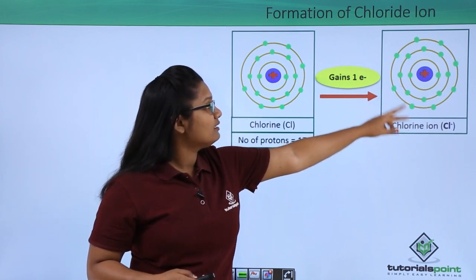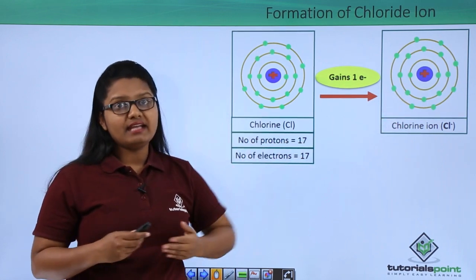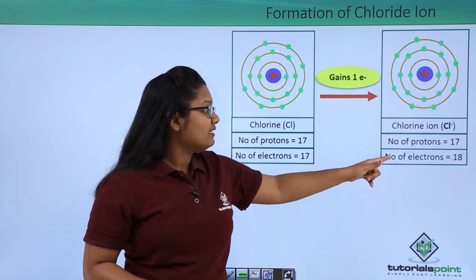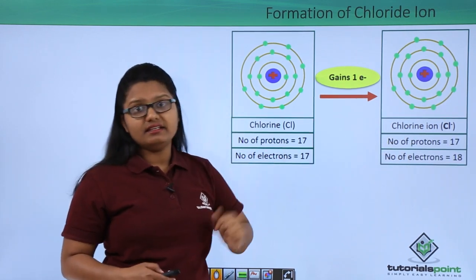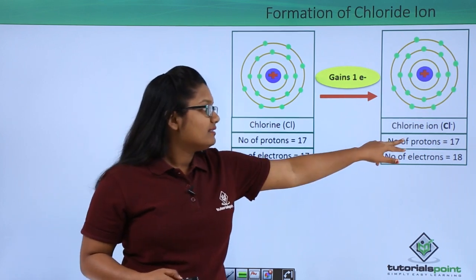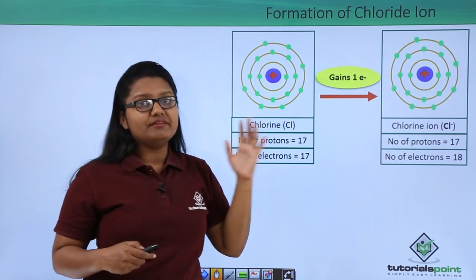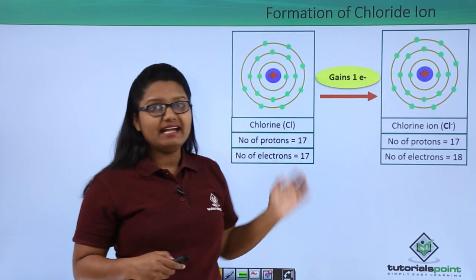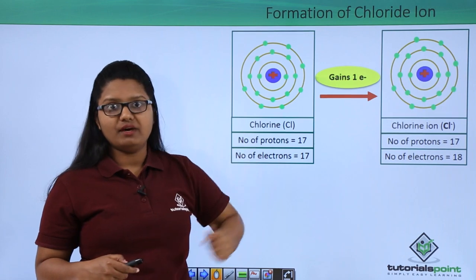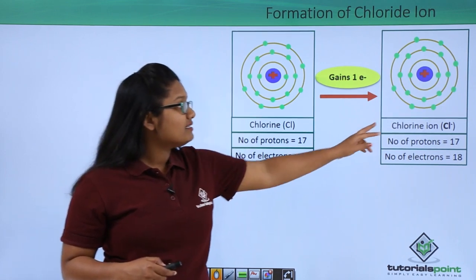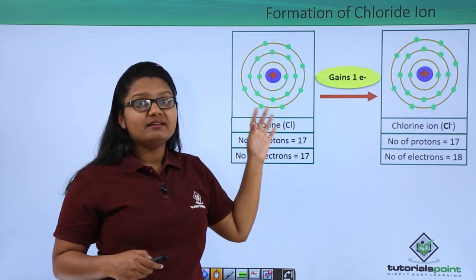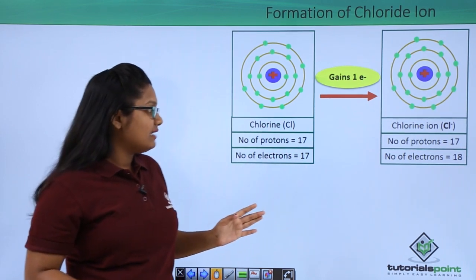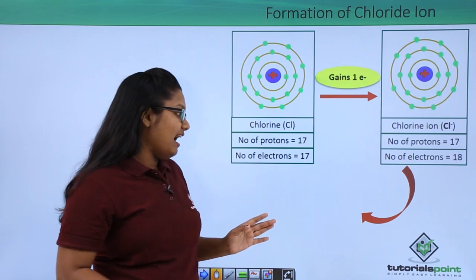After capturing that electron, all three shells of this chlorine atom are completely filled. It now has 17 protons but 18 electrons. These 17 protons nullify 17 electrons, but one extra electron is left out, which gives this chlorine atom a charge of minus one. This negatively charged chlorine atom is called the chloride ion.